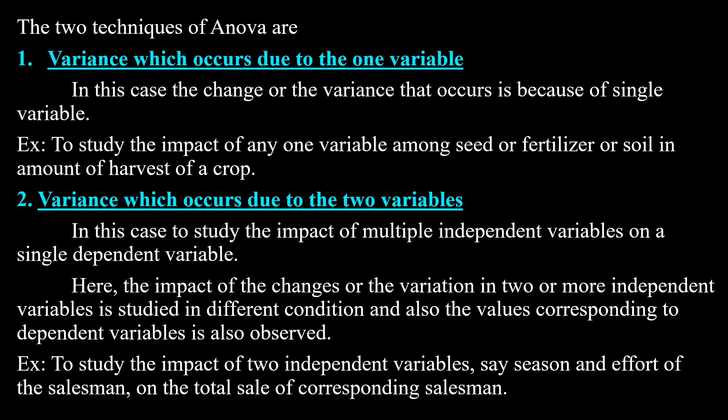Variance which occurs due to one variable — the independent variable is only one. For example, you can study the impact of any one variable among seed, fertilizer, or soil on the amount of harvest of a crop. Variance which occurs due to two variables means two independent variables — here the impact of variation in two or more independent variables is studied in different conditions. For example, to study the impact of two independent variables such as season and effort of the salesman on the total sales of the corresponding salesman.